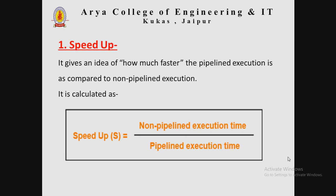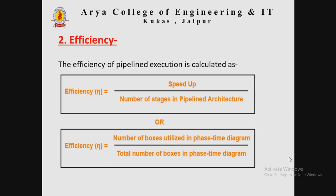The first measure is speed up. Speed up gives an idea of how much faster the pipeline execution is as compared to non-pipeline execution. The formula to calculate speed up, denoted by S, is: S equals non-pipeline execution time divided by pipeline execution time. This gives us the comparison between non-pipelined and pipelined execution.